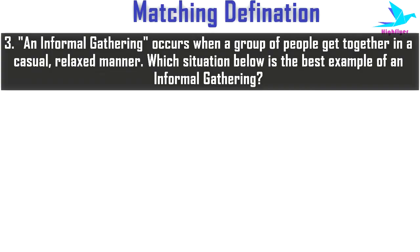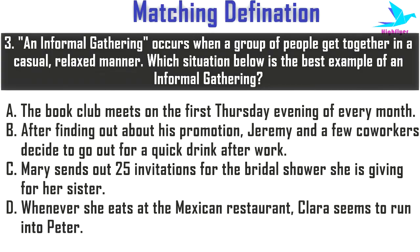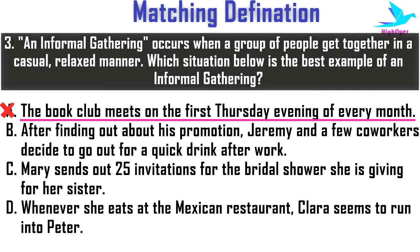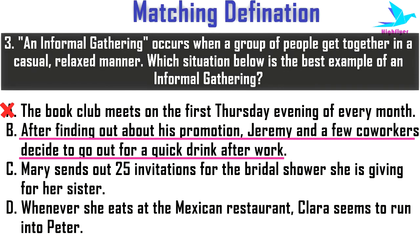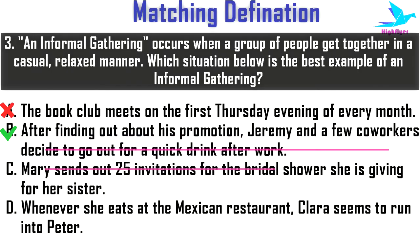Next example: An informal gathering occurs when a group of people get together in a casual, relaxed manner. Which situation below is the best example of an informal gathering? Option one: The book club meets on the first Thursday evening of every month. A club meeting is a planned and formal gathering, so it cannot be informal. Option two: After finding out about his promotion, Jeremy and a few co-workers decide to go out for a quick drink after work. This is definitely an informal gathering.